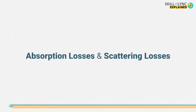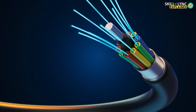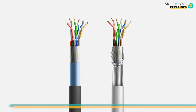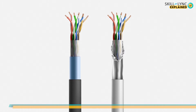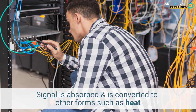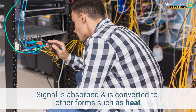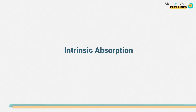In this video we'll be discussing absorption losses and scattering losses. First, we'll talk about absorption losses. An optical fiber is made up of either glass or plastic material. During fabrication of the fiber there might be some impurities present in the fiber that can cause loss in the signal. This loss is called absorption loss. Here the signal is absorbed and converted into other forms such as heat. The amount of loss that the signal incurs due to absorption losses depends upon the concentration of impurities present in the fiber.